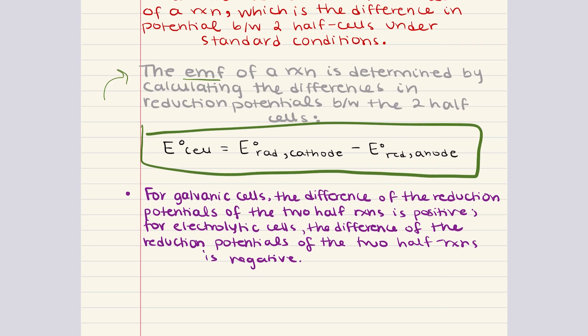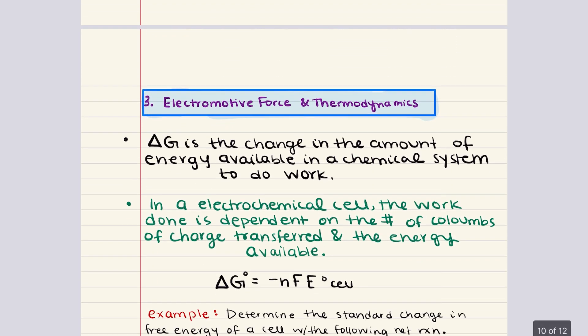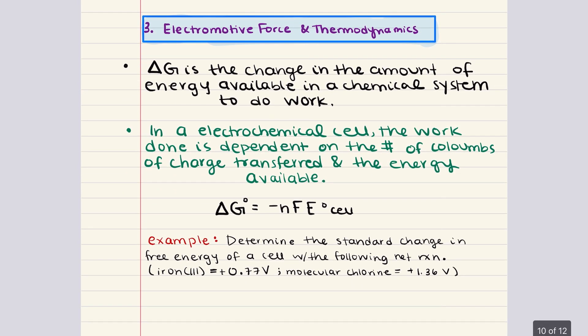We can go ahead and move into our last and final objective. Here we're going to discuss the electromotive force and thermodynamics. Throughout our discussion of electrochemistry and the different types of electrochemical cells, we've been making references to the spontaneity or non-spontaneity of the redox reactions. Let's now look more formally at this topic by relating free energy to electromotive force and the concentration of the redox reactants and products to the voltage of a cell at a given point in time.